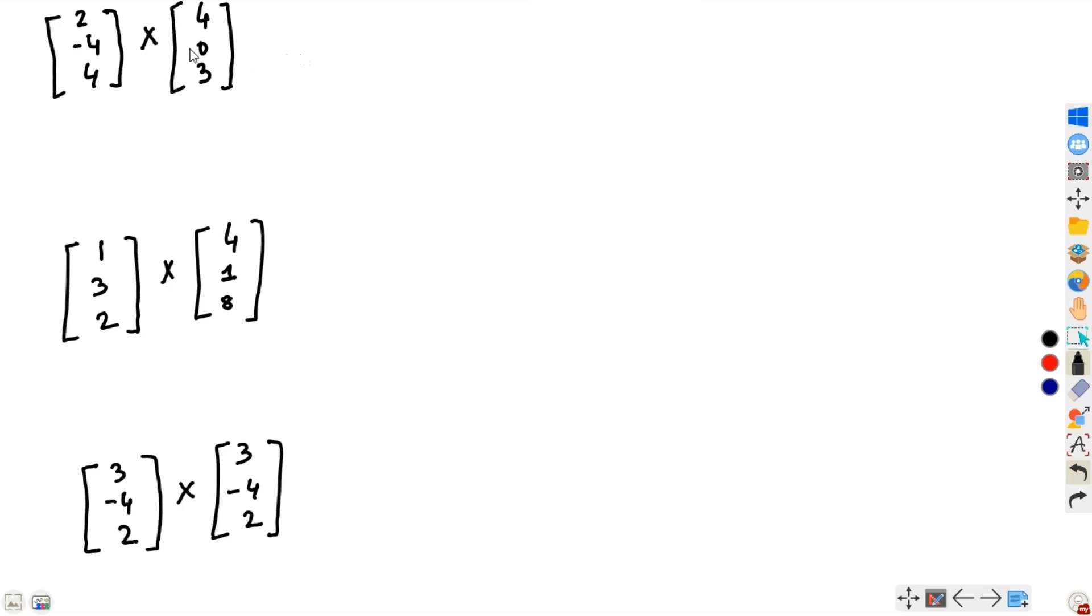Let us start with this example first. Let us assume this as alpha and this as beta. So we have the cross-product of alpha and beta, let us call this gamma.